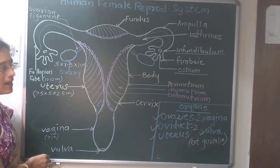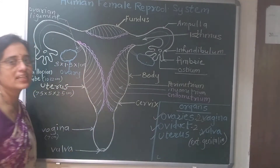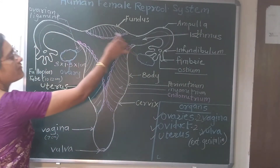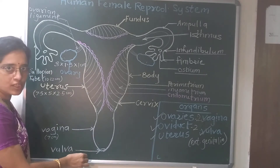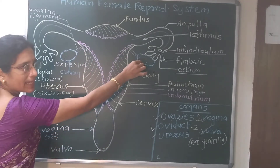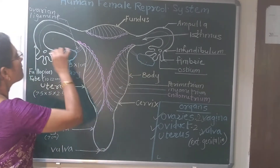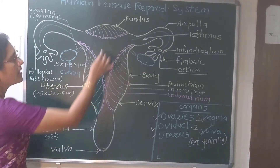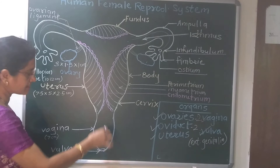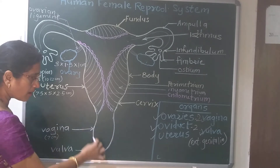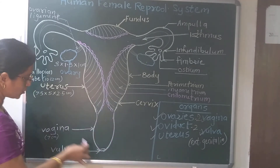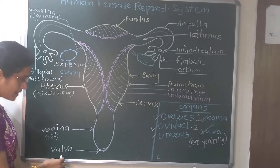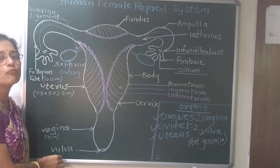Vulva is also called as external genitalia. So this is the female reproductive system: pair of ovaries, pair of fallopian tubes or oviduct, single uterus, and a birth canal passage called as vagina that opens outside by vulva.